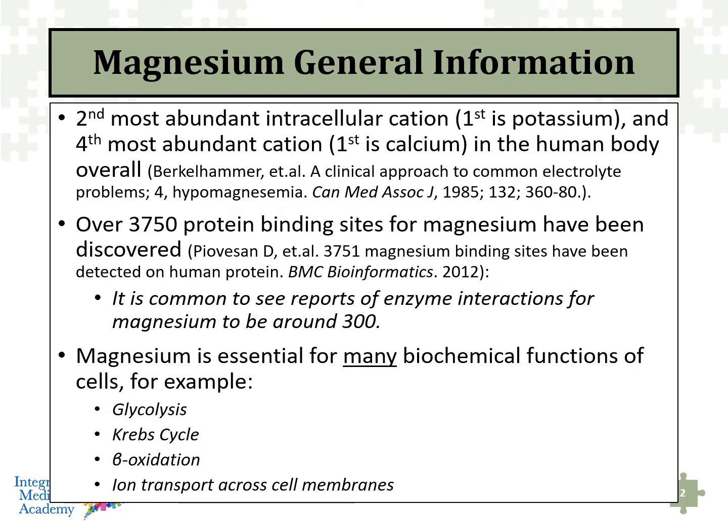Magnesium is essential for a lot of different biochemical functions in our cells. It's important for glycolysis and the metabolism of glucose, for Krebs cycle activity, what's called beta oxidation, and then critically important for ion transport across cell membranes.